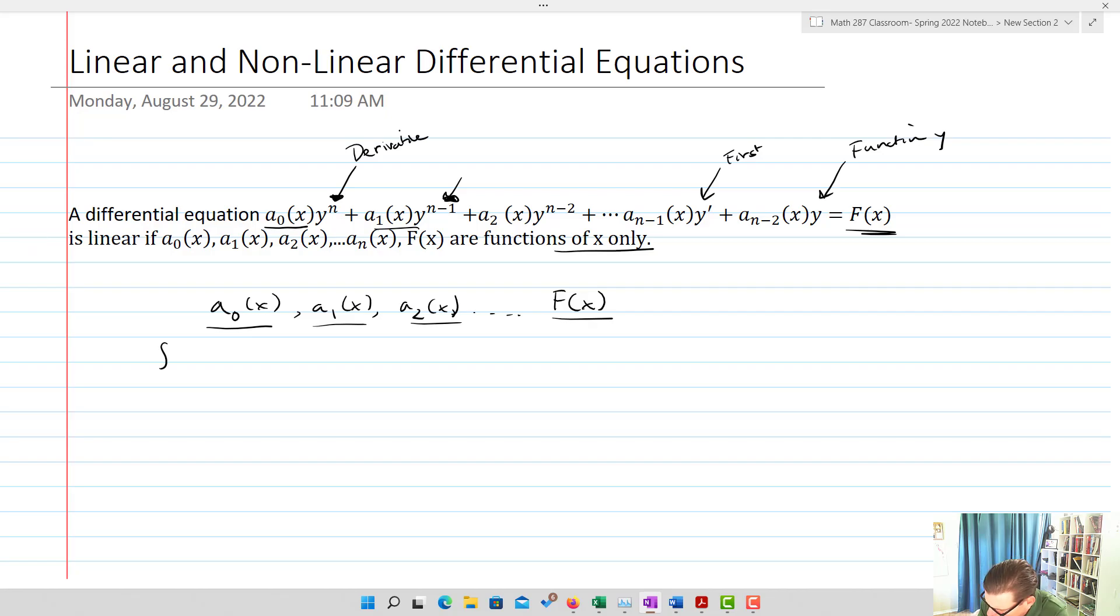Examples of functions of x only: f(x) equals sine x, f(x) equals a constant (that actually is a function of x only, it's x to the 0th power), f(x) equals x squared over 3 minus x - rational function but still a function of x only, it's only got x's in it.